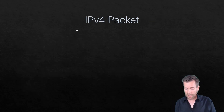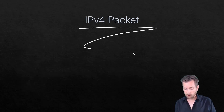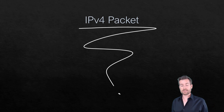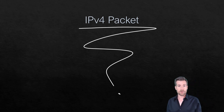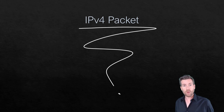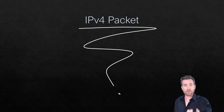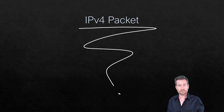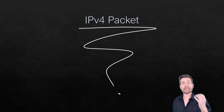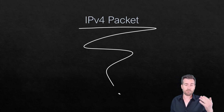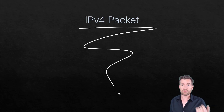That concludes the IP version 4 packet overview. As you can see, there's quite a bit involved, but each piece of information in the header plays a part in getting the packet from one location to the next.